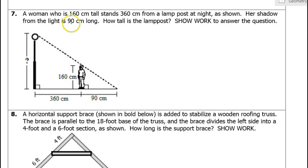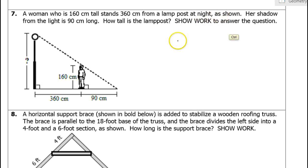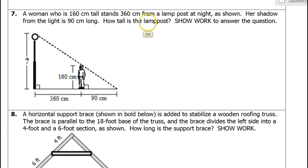Problem number seven: A woman who is 160 centimeters tall stands 360 centimeters from a lamp post at night. Her shadow from the light is 90 centimeters long. How tall is the lamp post? I'll put an x right here because that's what we are trying to find. Hopefully you can see that we have two similar triangles.